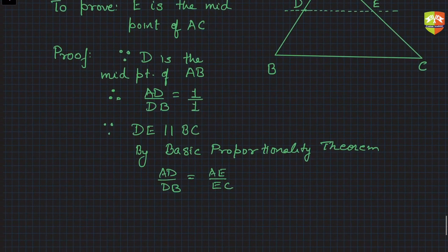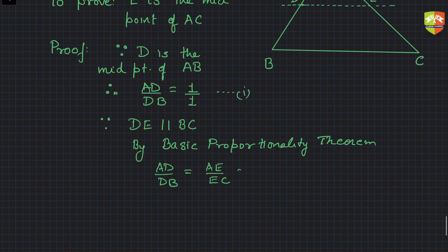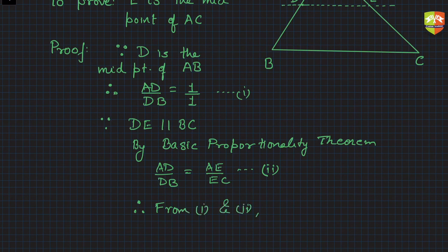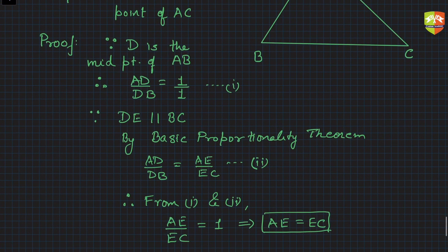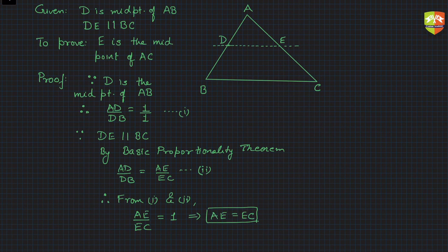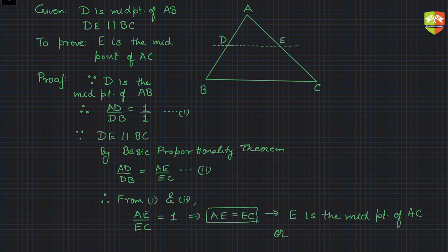From equations (1) and (2), the left-hand sides are the same, so AE divided by EC equals 1, which means AE equals EC. Therefore, E is the midpoint of AC, or equivalently, DE bisects AC.